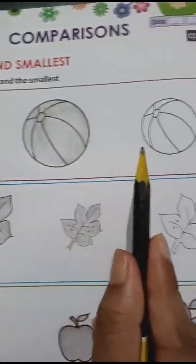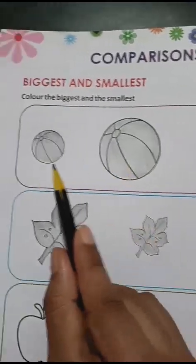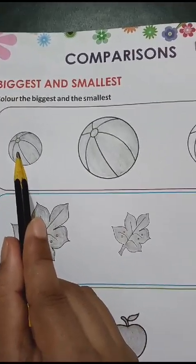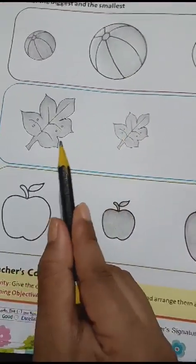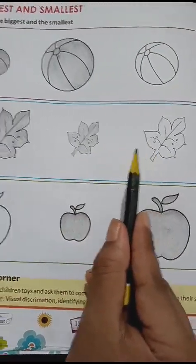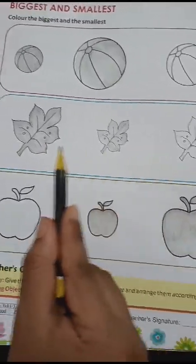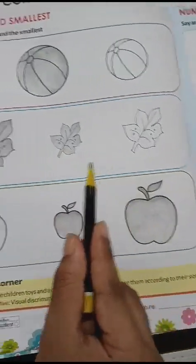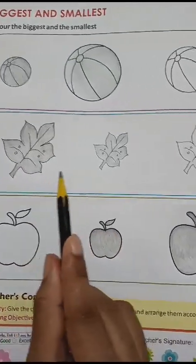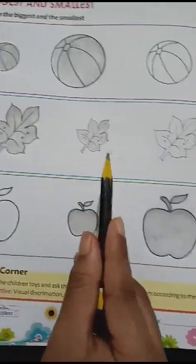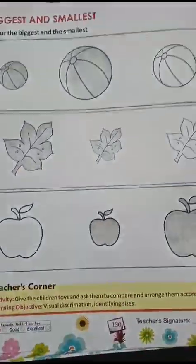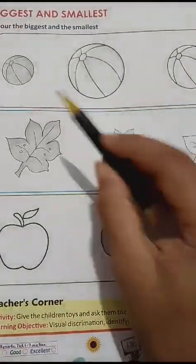Okay? This is not going to be shaded because this is the biggest and this is the smallest. Next, let's see. The leaf is the biggest. It is the biggest leaf in three of them.